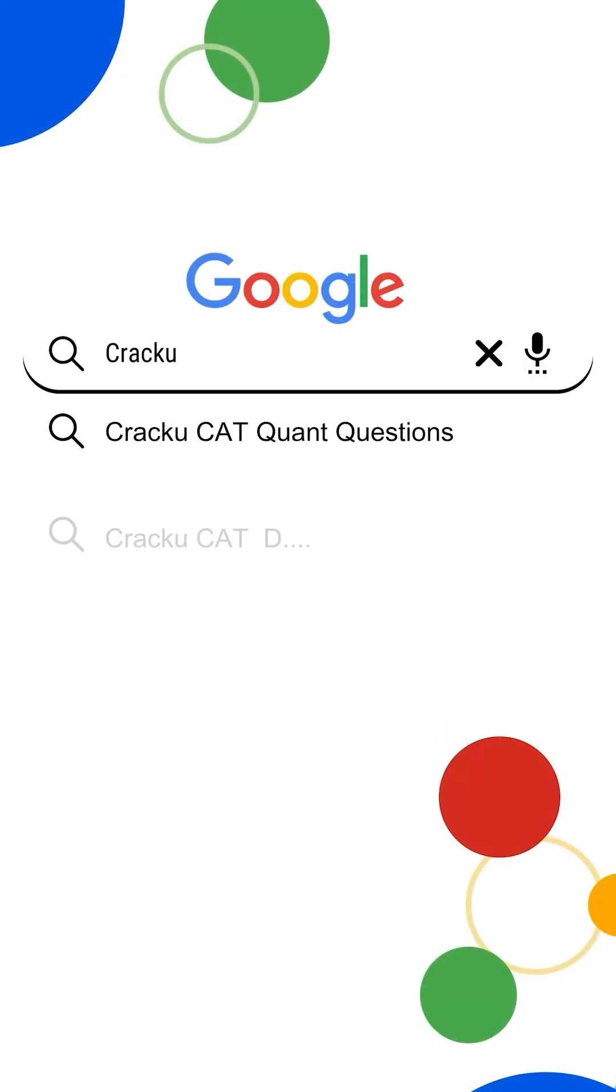If you want more memory-based questions and papers from past year's CAT exam, just go to Google and search Cracku CAT previous papers.